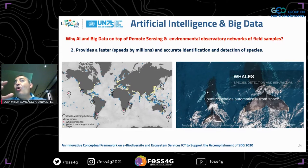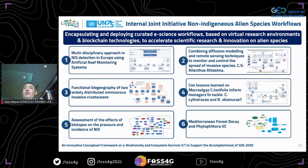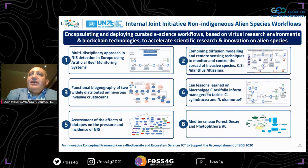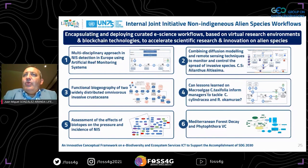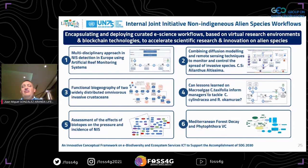We use open source remote sensing tools to provide faster identification of cetaceans and whale detections. A key international initiative deals with non-indigenous and alien species: detection of Ailanthus altissima — a bad weed affecting northern ecosystems — invasive blue crabs, the macroalga Caulerpa taxifolia, and Sargassum muticum, an exotic alga from Asia affecting South America and Europe and drastically changing biotopes, particularly in the Mediterranean.